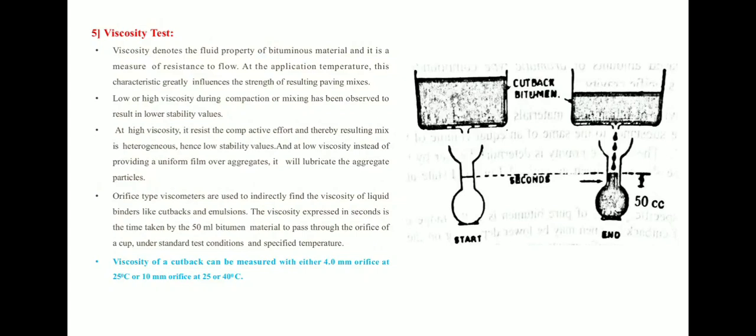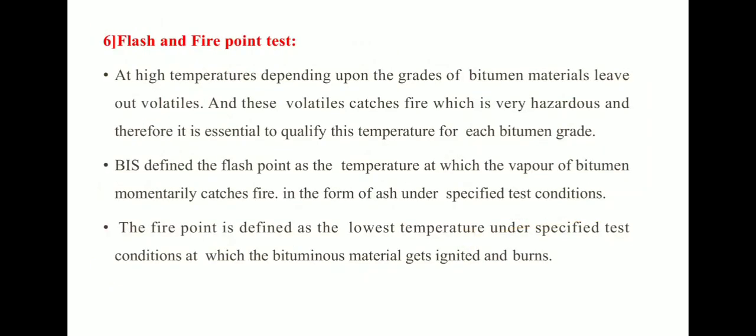Viscosity expressed in seconds is the time taken by 50 ml of bituminous material to pass through the orifice of a cup under standard test conditions at a specified temperature. The viscosity of cutback can be measured with either a 4 mm orifice at 25°C or a 10 mm orifice at 25°C or 40°C.